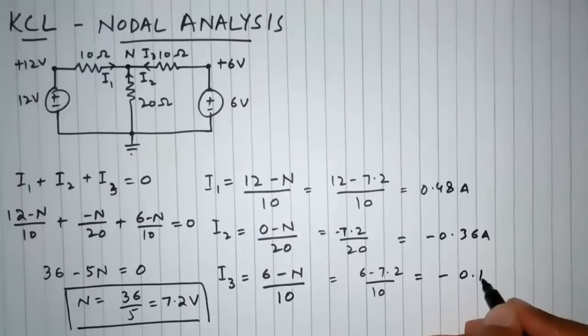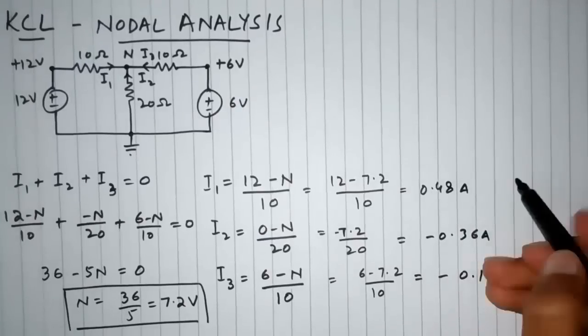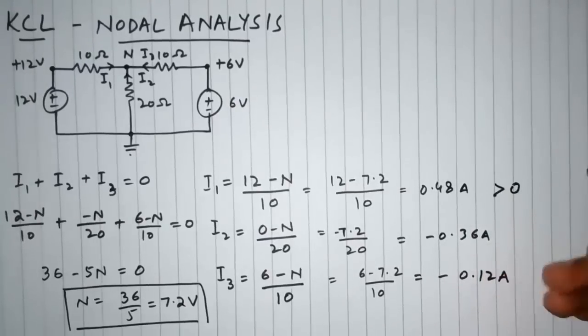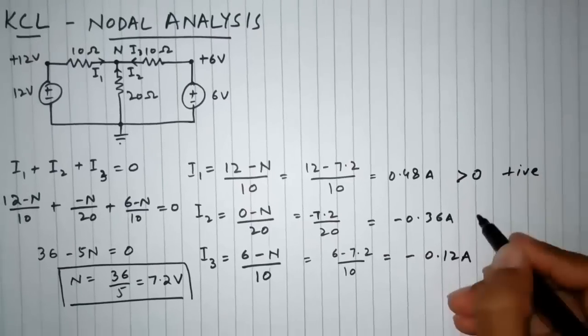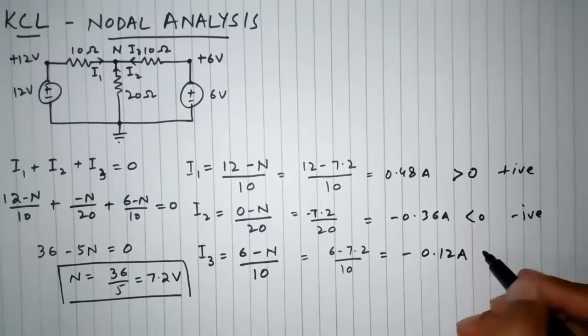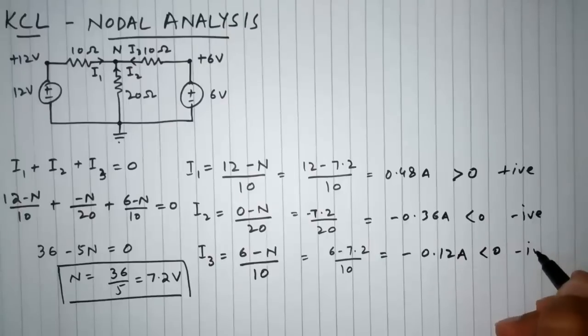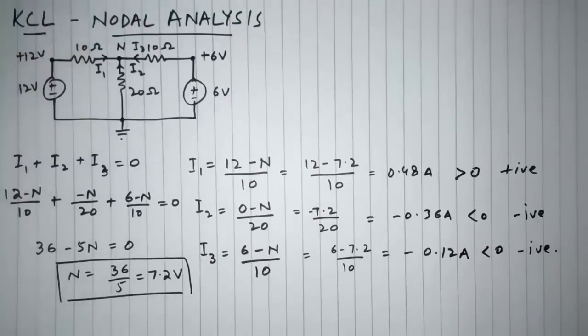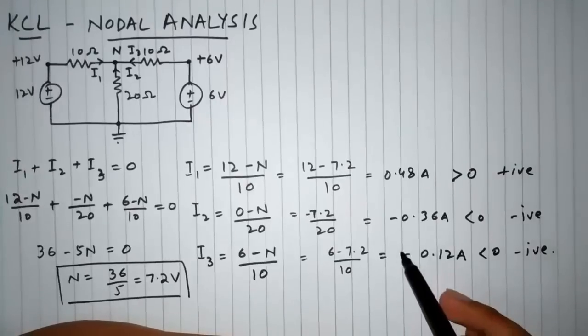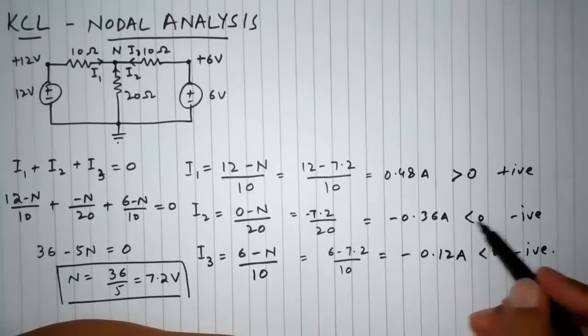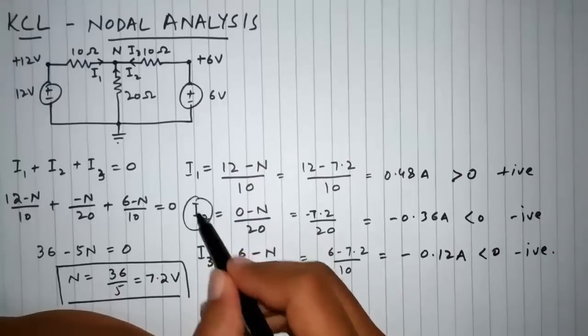Now you can see that this is greater than 0, that is, this has a positive value. This is negative and this is negative. So we assumed the direction of all the currents into the node, but some of the answers now have come negative.